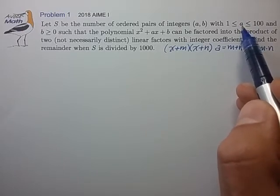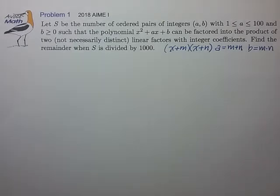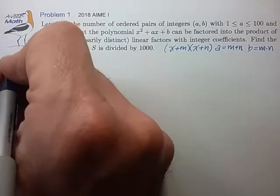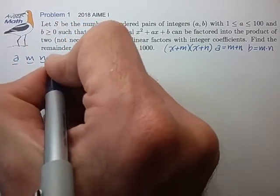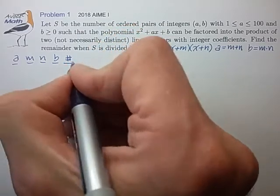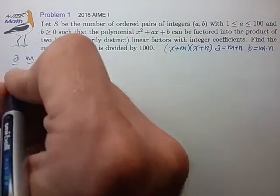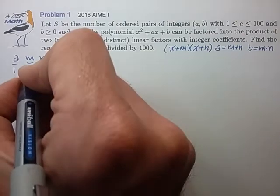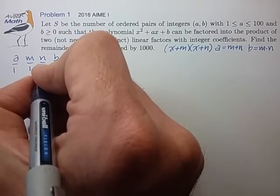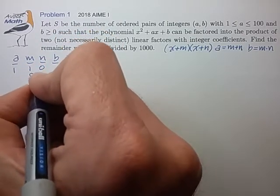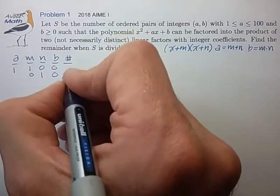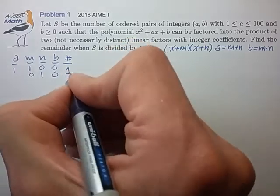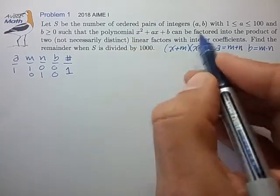Let's look at a table of example solutions indexed by the number a. We have columns: a, m, n, b, and the number of solutions. For a = 1, we see that m and n can be either (1, 0) or (0, 1). The b value is 0, so there's only one such value of b, meaning only one ordered pair (a, b) for a = 1.